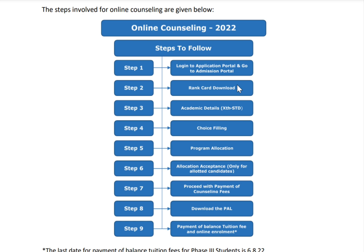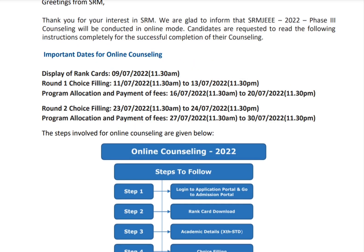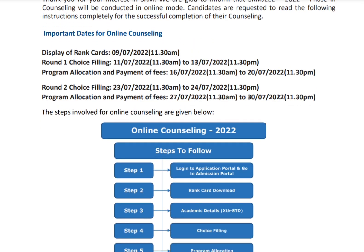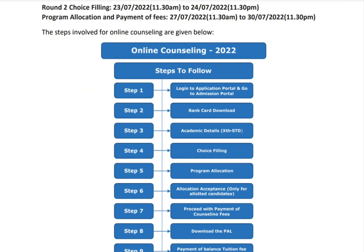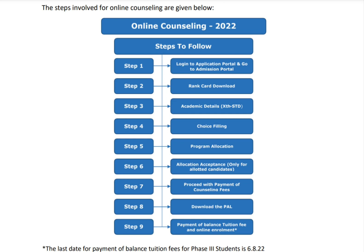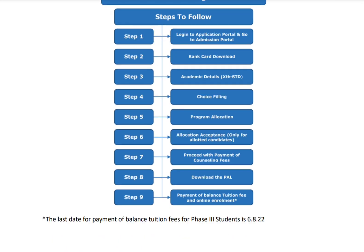Step five is program allocation, which will be done by SRM University. Program allocation for round one will be given on 16th and round two on 27th. Step six is allocation acceptance — you should accept the allocation. Step seven is proceed with payment of the counseling fee.